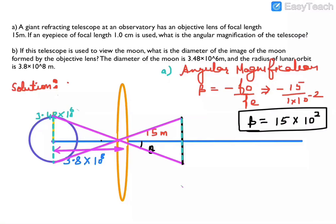Hello students, let's see this numerical — NCERT is a bit tough. A giant refracting telescope at an observatory has an objective lens of focal length 15 meter, so FO is 15 meter. The eyepiece is 1 cm — convert it into SI units — so the eyepiece focal length FE is 10⁻² meter. What is the angular magnification of the telescope?